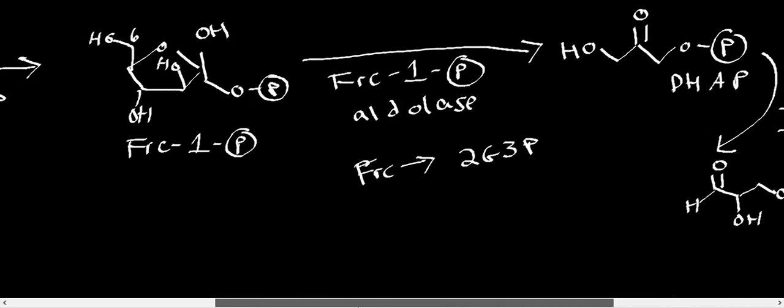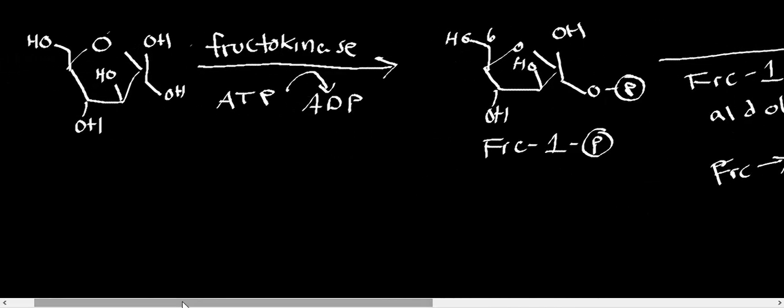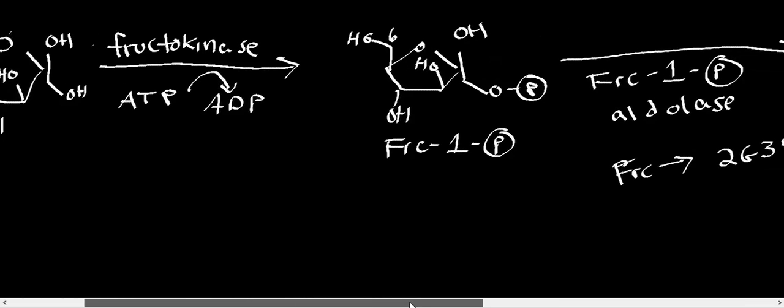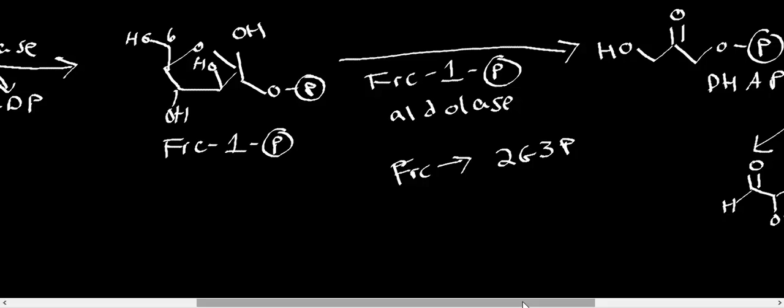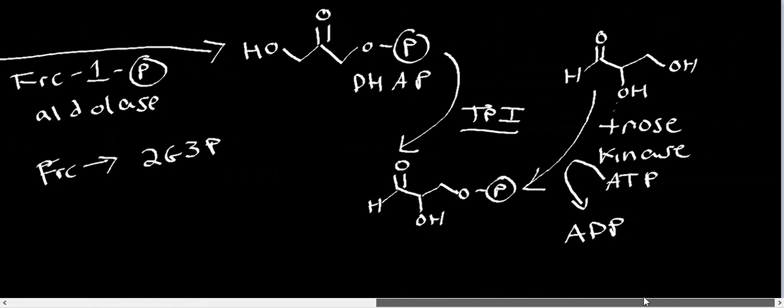So ultimately, let's regroup. We start with fructose, and we use the enzyme fructokinase. And already there's a little bit of angle strain on the fructose ring, the furanose ring. So it's going to be relatively easy for this aldolase to bust it up. So we get fructose 1-phosphate through that kinase. Then we get fructose 1-phosphate aldolase, which generates two products, glycerone phosphate and glyceraldehyde.